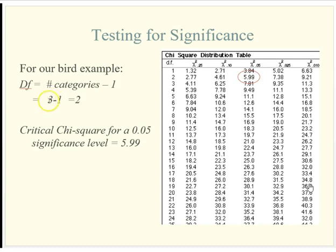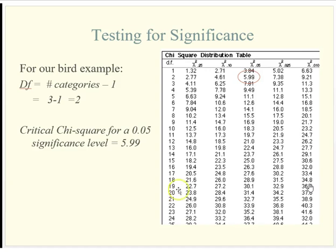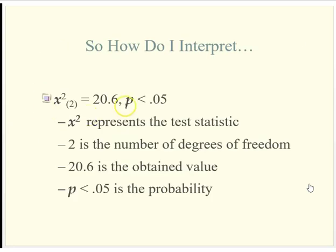We probably could have looked at the data and seen that species C is at 50 and species B is only at 17 — there's probably a significant difference from just random distribution. But the table solidifies the statistical evidence. Just like our other tests, we have shorthand: specify that we're using the chi-square test statistic, how many degrees of freedom, the exact chi-square value calculated, and whether or not it exceeded our critical value.